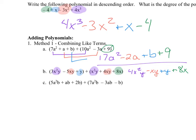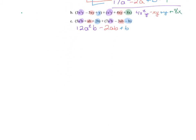Now the next one: I have two a-squared b terms — 5 and 7 gives me 12a squared b. Then I have 'ab': 1 minus 3 gives me negative 2ab. Then I have b squared terms: 2b and minus b gives me just plus b. That's my solution for adding these polynomials.